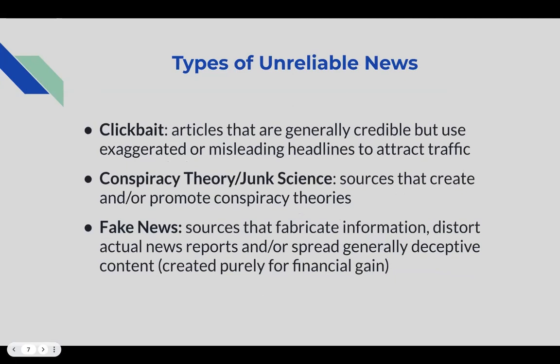A few more types of unreliable news: clickbait, which are generally credible articles that use exaggerated or misleading headlines to attract readers. There is also conspiracy theory and junk science — sources that create or promote conspiracy theories not based on true evidence. Finally, fake news includes sources that fabricate information, distort actual news reports, and spread deceptive content created purely for financial gain, rather than from misinterpretation — it's created with aggressive intent.